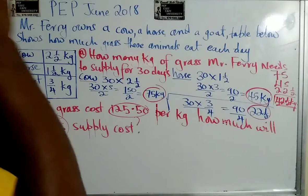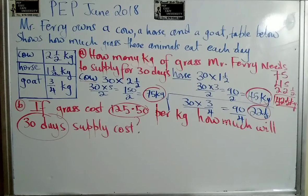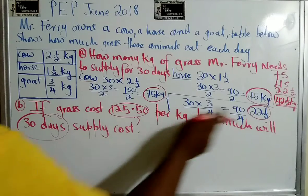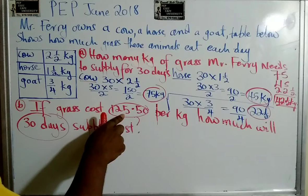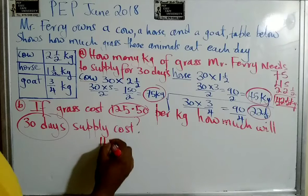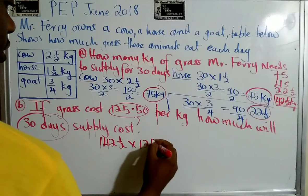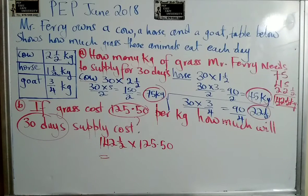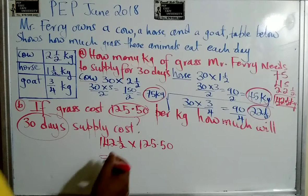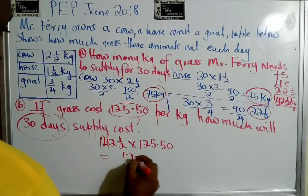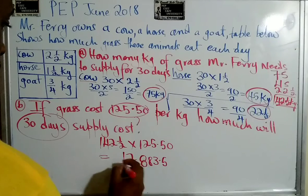Somebody tell them for me. So if it costs $125.50 per kilogram, for each kilogram you're going to pay this. We're going to have a total of 142 and a half, so we simply multiply 142 and a half times 125.5. This is unreasonable — these poor kids have to work this out without a calculator. It does not make any sense. You should test the knowledge instead of giving them crazy numbers. So the answer is $17,883. When they become adults, they're going to use calculators.